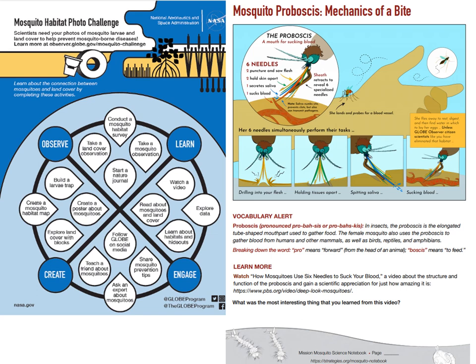When GLOBE runs these challenges, a lot of work and support materials are produced in the background. For the mosquito habitat photo challenge, a number of resources were developed aimed at education establishments — including learning activities, ideas, background on how mosquitoes collect blood, which most students will find interesting. They also produced a science log or logbook so students can keep their science information collected during and beyond the challenge.